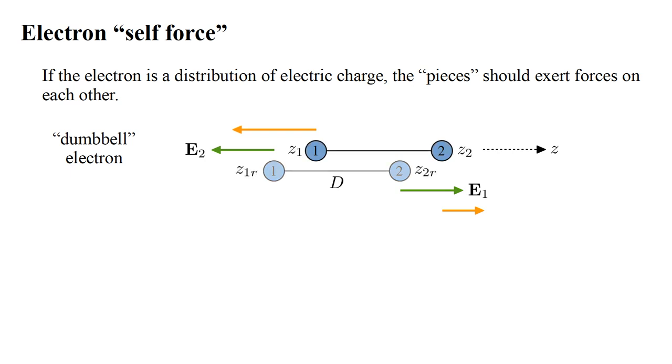Now imagine the fields are produced by the charges at their original positions, Z-one-R and Z-two-R. Then, without changing the fields, the charges are moved rightward to positions Z-one and Z-two. Assume each part only sees the field produced by the other part. The result would be that part one would feel a stronger force toward the left than part two would feel toward the right, and there would be a net leftward force on the entire electron.